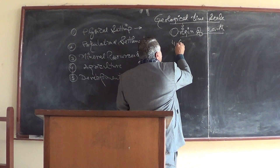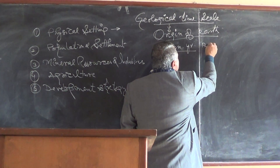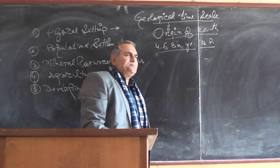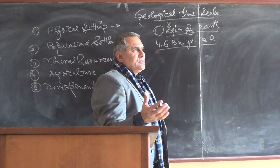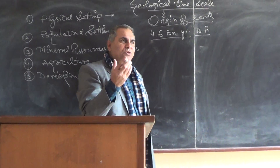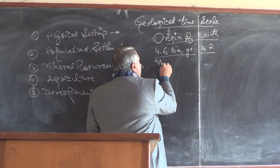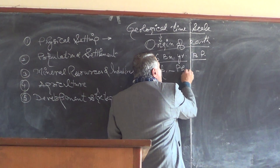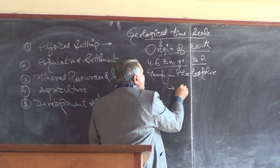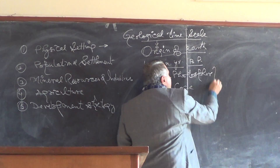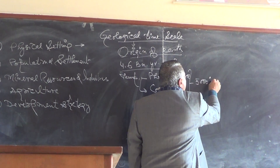The Earth is 4.6 billion years old. It was once a segregated burning mass of the sun. The temperature of the photosphere of the sun and the temperature of the core of the Earth are the same — approximately 5000 degrees Celsius.